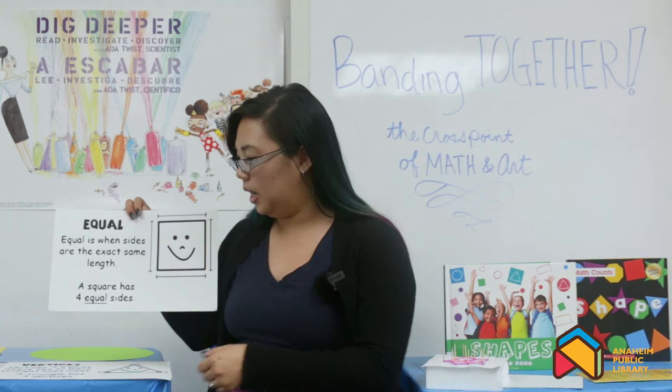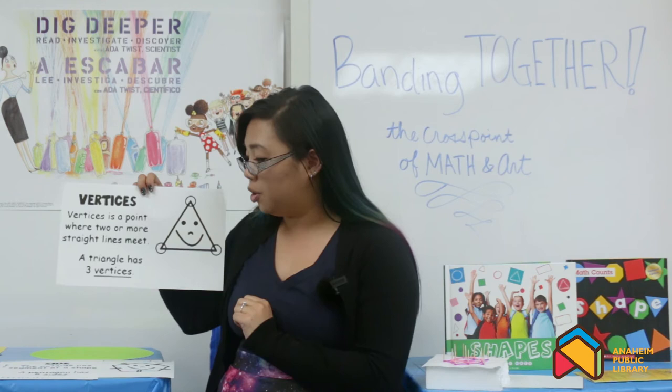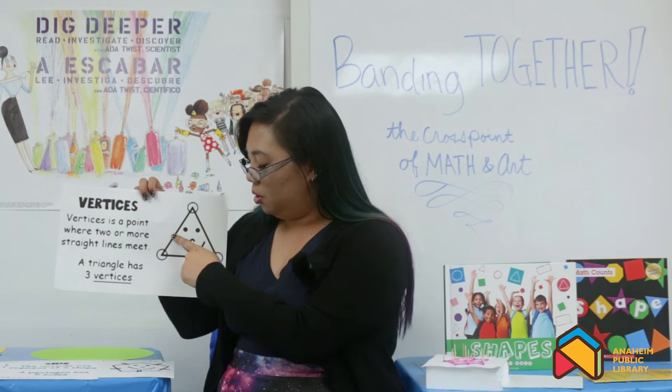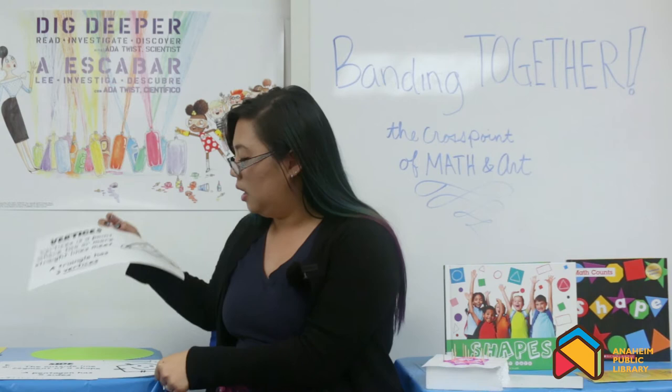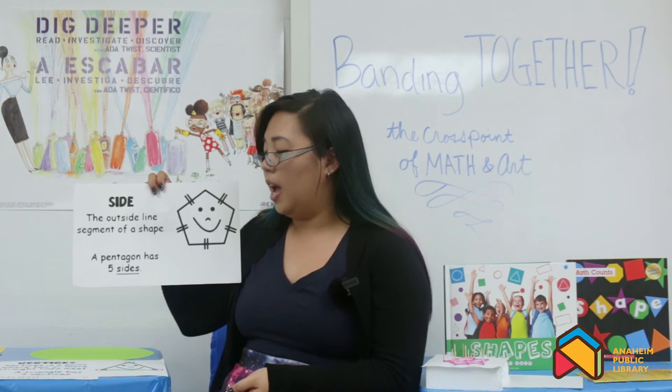The next thing we want to learn is about vertices. A vertex is a point where two or more straight lines meet. A triangle has three vertices. Where these two lines connect, there's one vertex, another where two lines meet here, and these two lines here create another vertex. And the last thing we want to know is what a side is. The outside line segment of a shape is what we call a side. A pentagon has one, two, three, four, five sides.